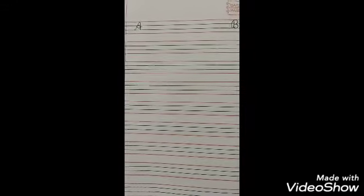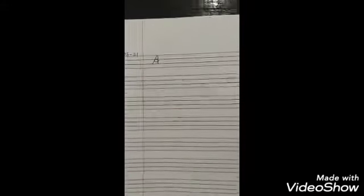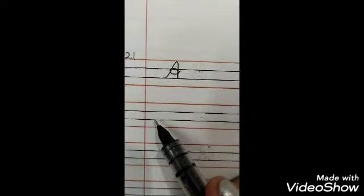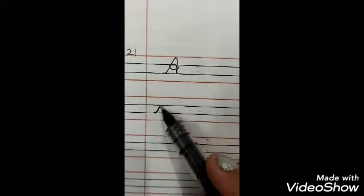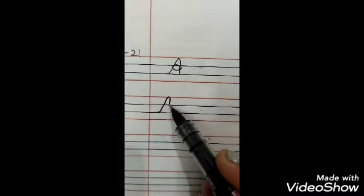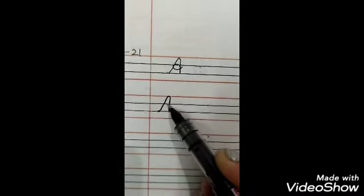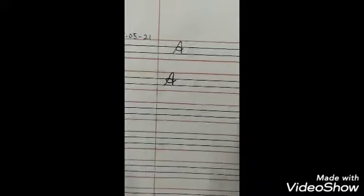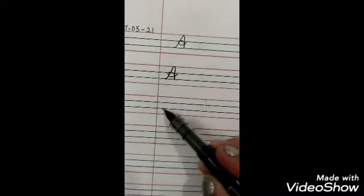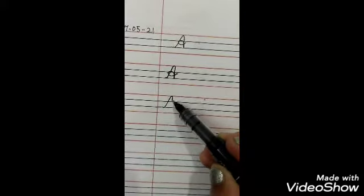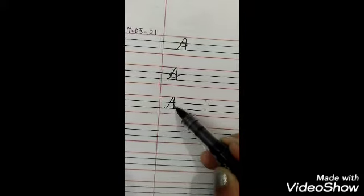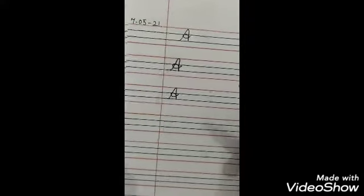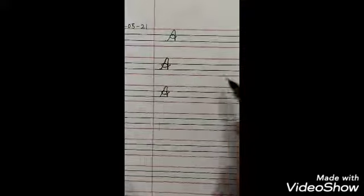A and B. Let's start with A. Start from the blue line, take a slanting line up, down, up, take a turn and leave. Again, a slanting line up, down, take a turn and leave.